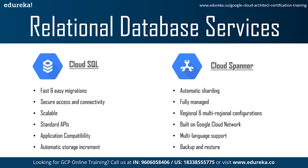Cloud Spanner is a distributed SQL database developed by Google — a globally distributed database service providing global transactions, strongly consistent reads, and automatic multi-site replication and failover. Key features include auto-sharding: Cloud Spanner optimizes performance by automatically sharding the database based on request load and data size, so you can focus on scaling your business. It is fully managed with easy deployment at every stage; synchronous replication and maintenance are automatic and built-in.